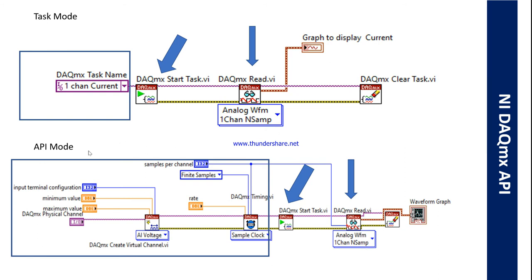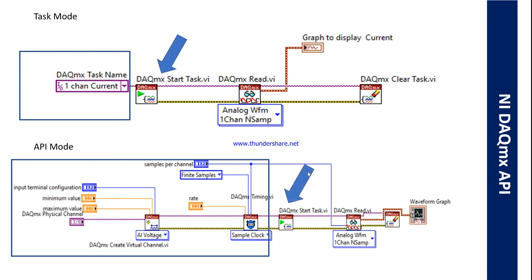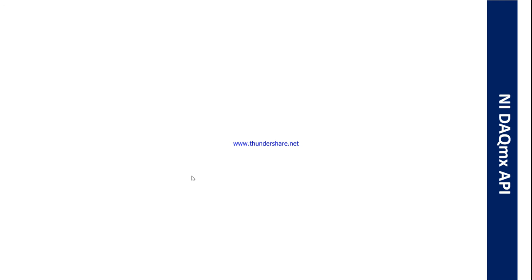Right now, we will try to know what is the benefit if we use API mode. As you saw in the previous video, if you want to change the minimum and maximum value during runtime, we cannot modify or change it because those were already fixed in task mode. We also cannot change the number of samples or rate according to our requirements. So API mode is much easier to control and configure our input terminals and parameters when we want to measure the data.